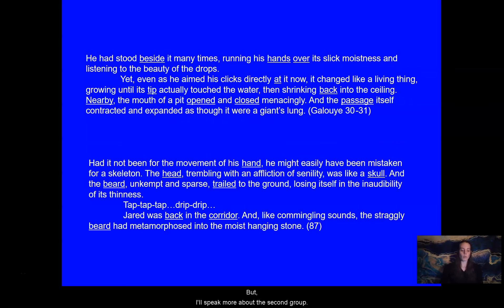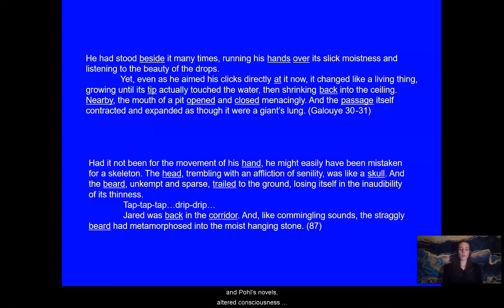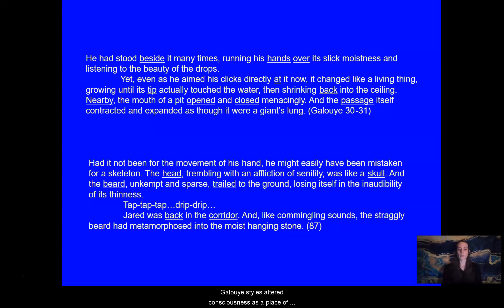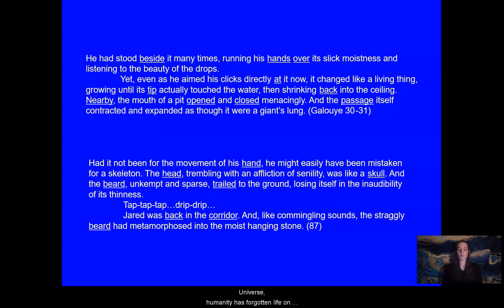In the novels by the second group of authors, altered consciousness arises from the loss of control resultant of a shared mind space. In Dick, Galloway, and Pohl's novels, altered consciousness expands the self by first blurring the boundaries between the self and the other. Focalizers generally experience it as initially terrifying, but not necessarily negative ultimately. Altered consciousness is a gateway to knowledge that enables personal transformation. Galloway styles altered consciousness as a place of perception rather than action, but the inward perception of the focalizer's own body is projected outwards onto the environment. So in Dark Universe, humanity has forgotten life on the surface, having moved underground hundreds of years ago after nuclear annihilation.